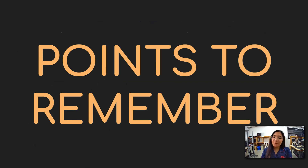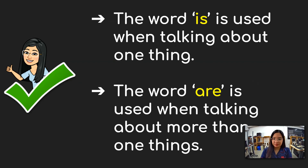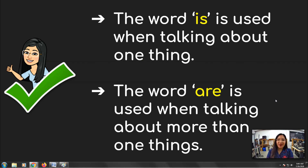Okay. Now there are some points that you need to remember in this lesson. First, a sentence has a complete thought or complete idea, and a non-sentence doesn't have a complete thought or complete idea. Next, the word "is" is used whenever we are talking about one thing or a singular noun. And we are going to use the word "are" whenever we are talking about more than one noun, or plural nouns.